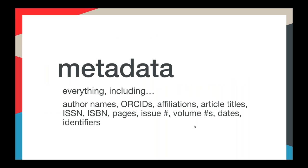When you register your content, you must send us basic citation metadata for every item you register. This includes titles, authors, publication dates, issue numbers, ISSNs — anything that describes the content you're registering. We have minimal requirements because we need to support a range of publication practices, but we'll ask that you send us as much metadata as possible and that it be accurate and clean. The more robust your metadata is, the more likely your DOIs will be discovered and disseminated.